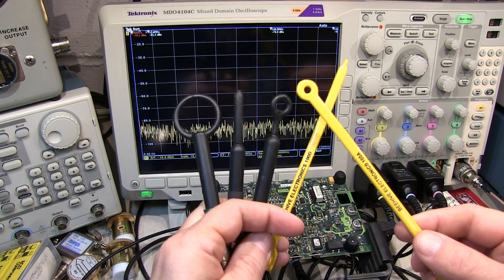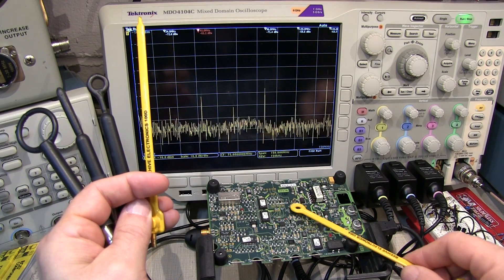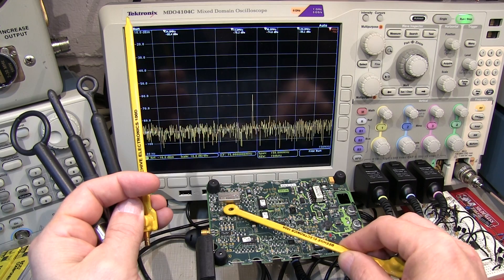Near field RF probes, or sniffer probes such as these, can be extremely valuable to help you locate sources of emissions from a circuit board or a product that you're developing.